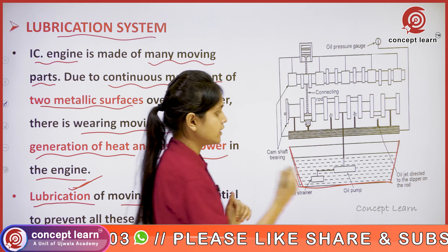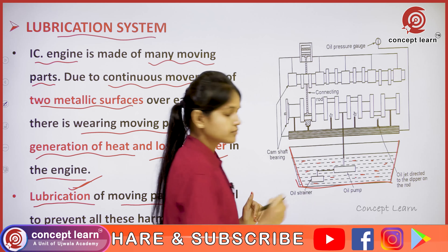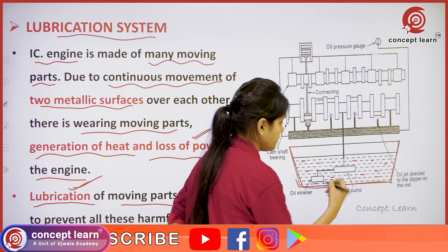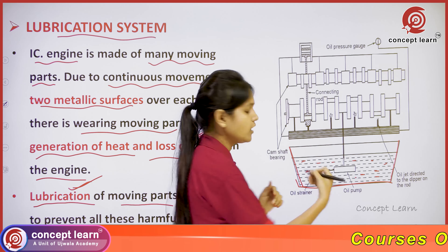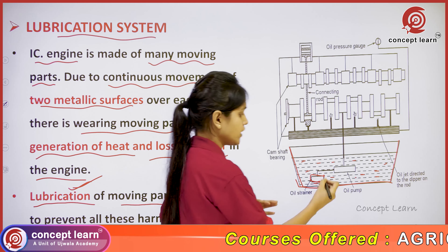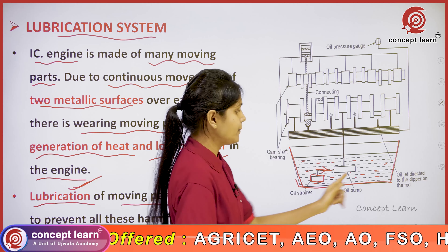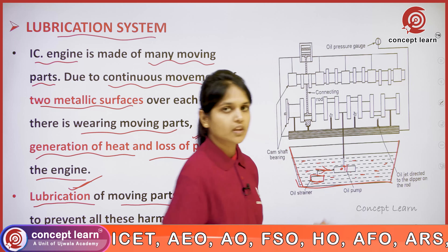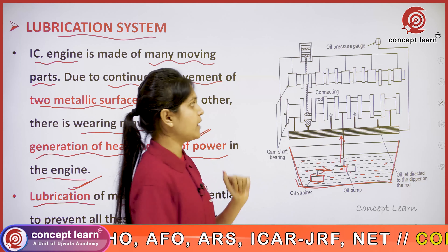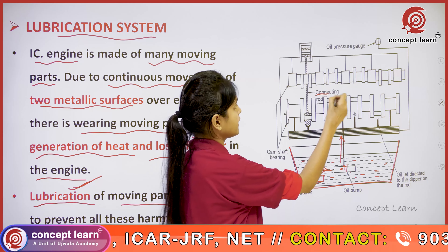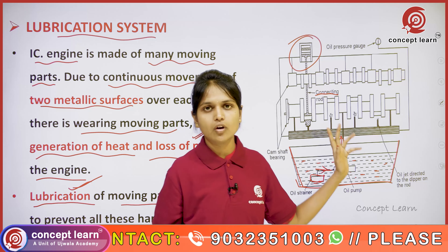This is the container holding the oil. We use an oil strainer, which filters heavy particles from the oil. From the strainer, the oil enters the oil pump, then passes through an oil filter before being supplied to the various engine parts such as the connecting rod and piston.